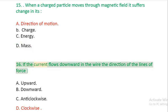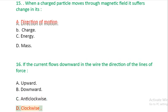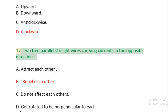Question 16: If the current flows downward in the wire the direction of the lines of force: A: upward. B: downward. C: anticlockwise. D: clockwise.